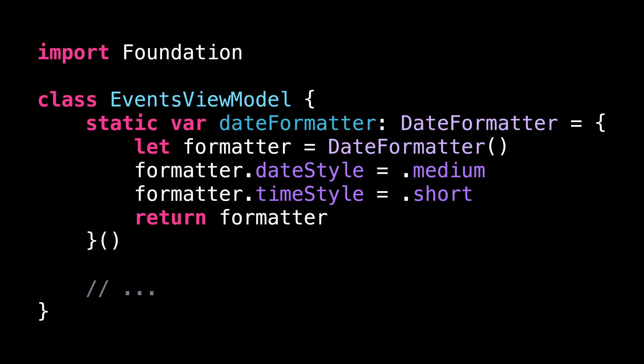I want to show you a nice hidden feature of static properties. Let's have a look at an example. This is a typical use case of a static property: storing a value that will be shared across all instances of a type.